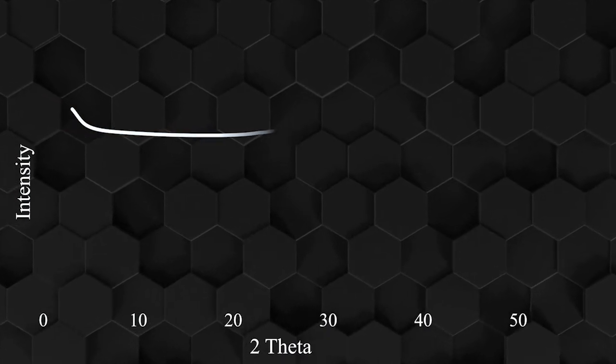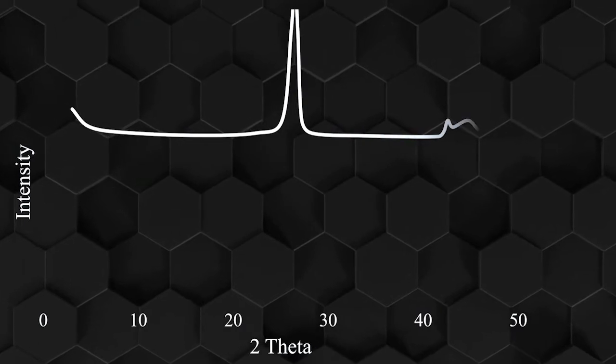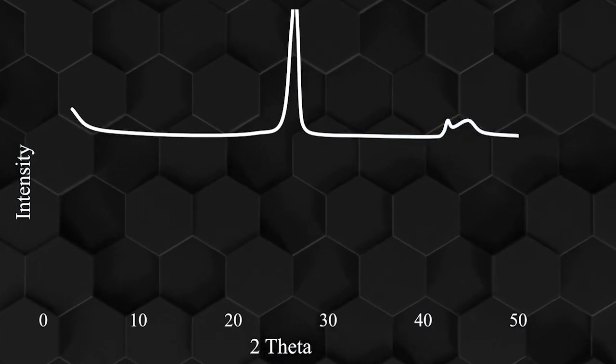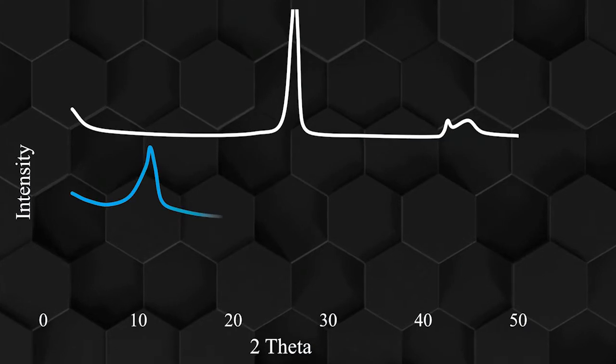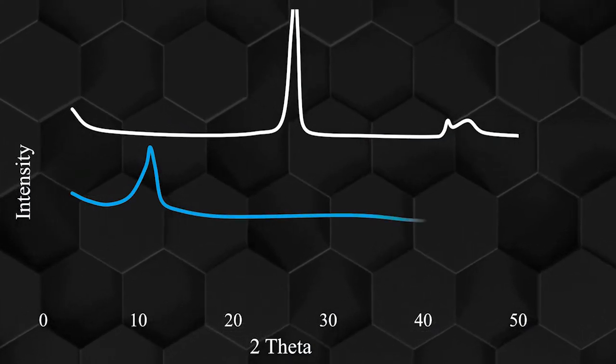As you can see in the XRD pattern, the graphite peaks disappear after being converted to graphene oxide. Graphene oxide has a famous peak at 2 theta about 10 degrees.